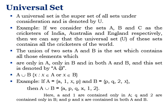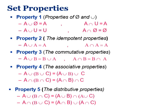The universal set is a superset of all sets under consideration, denoted U. For example, if sets A, B, and C are cricketers of India, Australia, and England, then the universal set U contains all cricketers of the world. The union of two sets A and B is the set containing all elements only in A, only in B, and in both A and B, denoted A ∪ B = {x | x ∈ A or x ∈ B}.